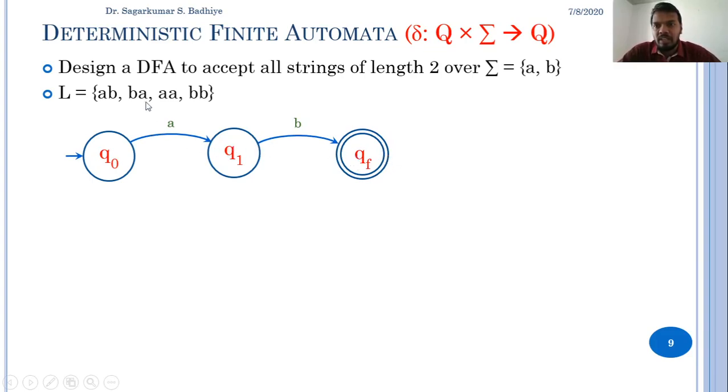Now consider the second string ba. Again we start from the initial state, read b and go to a new state q1, then from q1 read a and reach a final state. So this will accept ba.